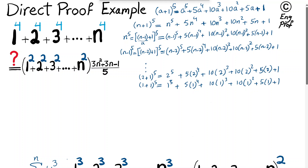So what? Why are we bothering ourselves with this? The reason is that things start cancelling out. If we start adding all these equalities together — all the left-hand sides equal to all the right-hand sides — you can see that after adding, n to the power 5 cancels out, n minus 1 to the power 5 cancels out, and so on and so forth.